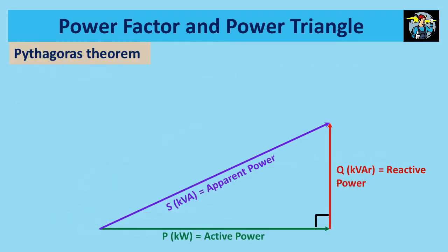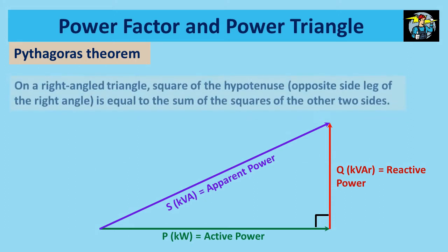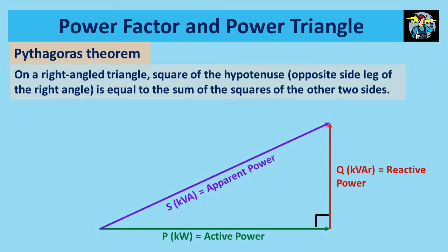When solving problems related to the power factor, you need to know about the Pythagoras theorem, and here is just a reminder on it. It says on a right-angled triangle, square value of the hypotenuse, that is opposite side leg of the right angle, is equal to the sum of the square values of the other two sides. Here on our power triangle, S is the opposite side of the right angle. Then Q squared plus P squared equals S squared. When you take P squared to the other side, final outcome shows Q equals to the square root of S squared minus P squared.